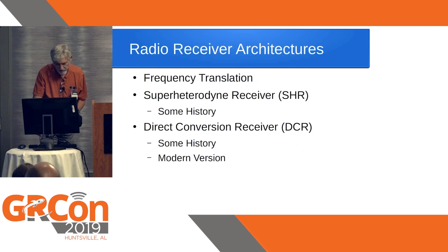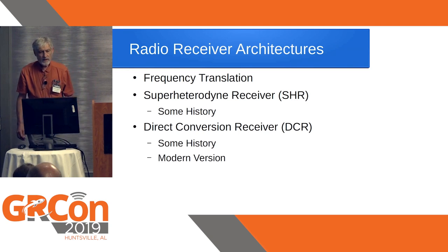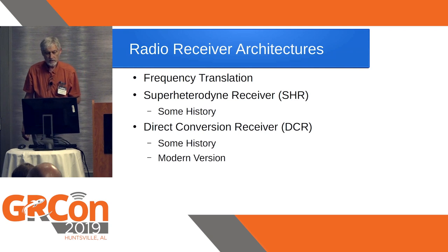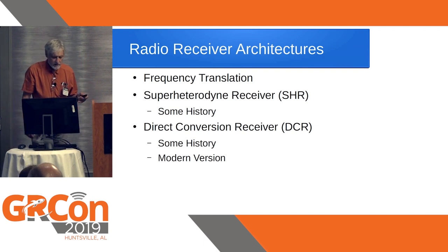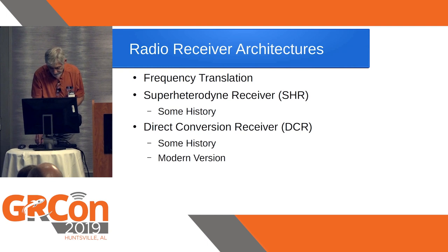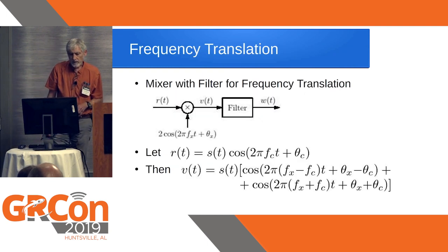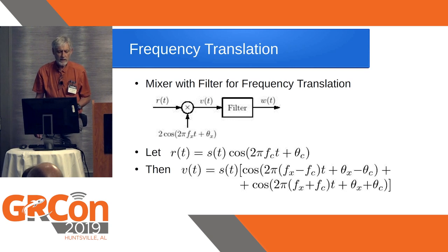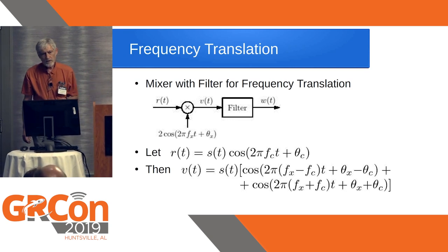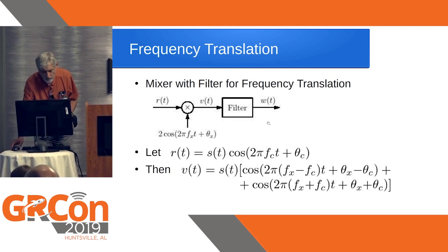First we look at radio receiver architectures. We look at frequency translation as one of the basic building blocks when you build radios, and then two main architectures: the superheterodyne receiver (SHR) and direct conversion receivers (DCR). In frequency translation, you basically have a multiplier and you multiply two sinusoids together. When you multiply two sinusoids, you get the sum frequency and the difference frequency at the output, and one of the two you filter out.